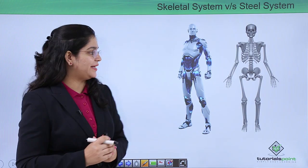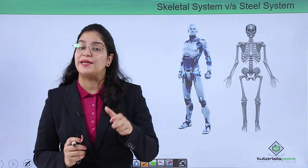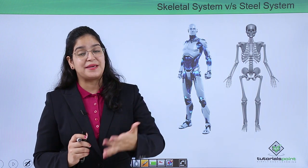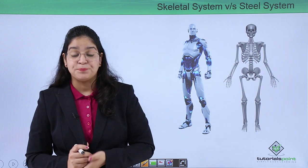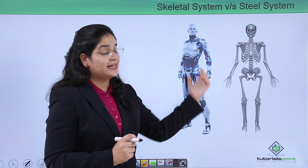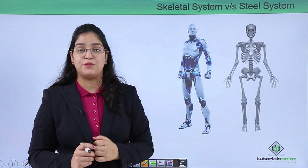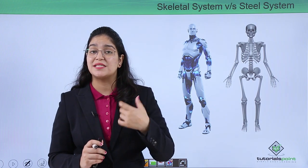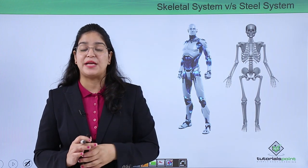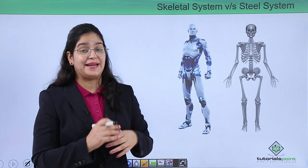Another very important factor about our skeletal system is that it is made up of living cells, so this system can heal itself. If you were to replace the skeletal system with a steel system, obviously your system would become much stronger, but at the same time you would not be able to move because iron is very strong and very heavy in weight.